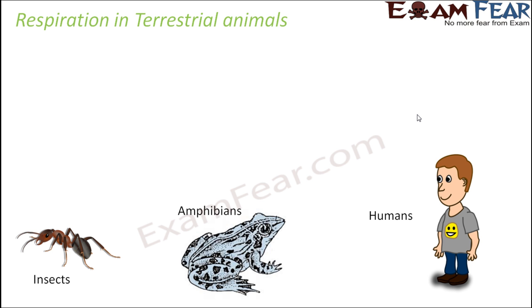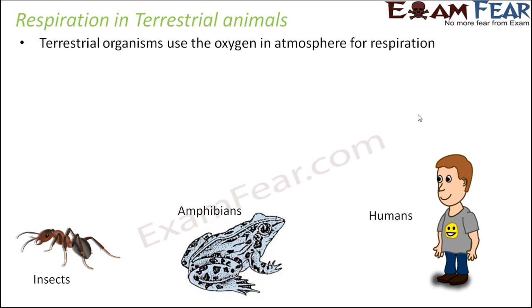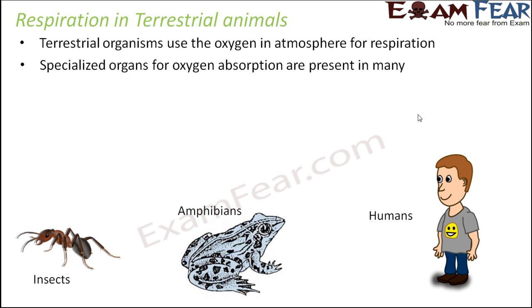For terrestrial animals — maybe insects, amphibians like frogs, or humans — they need to take in the oxygen present in the atmosphere, so they just breathe in that oxygen. Inside the body, different organisms have different specialized organs for this purpose.